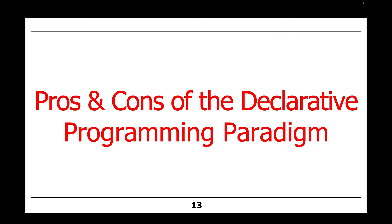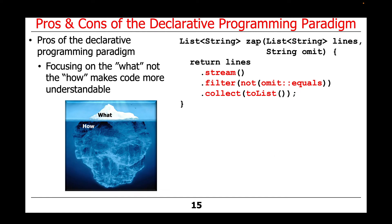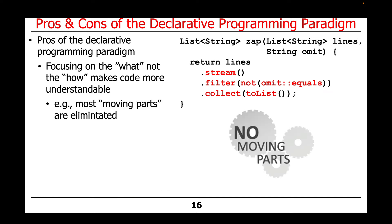Let's talk about the pros and cons of using a declarative programming model in Java, starting with the pros. Declarative programming focuses on the what, not the how, thereby making the code more concise and understandable once you understand the programming model. Most of the moving parts are eliminated — there's no visible control constructs, no loop, no if statement, no switch. You can read the code from top to bottom: convert the lines into a stream, filter out anything that equals the omit string, and collect the results into a list.